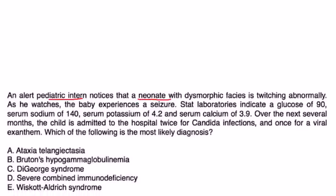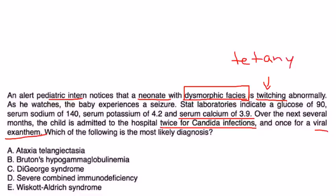A pediatric intern notices that a neonate with dysmorphic facies is twitching abnormally. As he watches, the baby experiences a seizure. Stat labs indicate glucose 90, sodium 140, serum potassium 4.2, and serum calcium 3.9. Over the next several months, the child is admitted to the hospital twice for candida infections and once for a viral exanthem. What's the most likely diagnosis? It's a great question. They talk about abnormal facies, the twitching is tetany, and the neonate has tetany because of hypocalcemia. They also mention recurrent infections. It all points to DeGeorge syndrome.